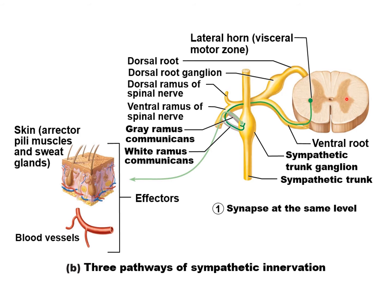Starting in our lateral horn — there's the lateral gray horn right there. That's where our sympathetic nervous system begins. It's peripheral nervous system, it's motor. Remember, it's always, except for one exception, a two-neuron chain. Here's our pre-ganglionic neuron cell body; there's the axon leaving that lateral horn. There's the ventral root. It becomes the spinal nerve, and then this dark green pre-ganglionic neuron will go through the white rami communicantes, or white ramus, and now we're inside the sympathetic chain ganglia.